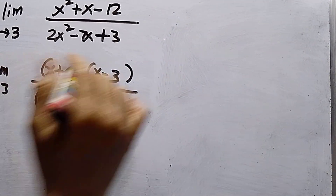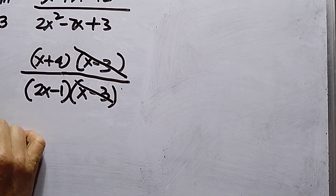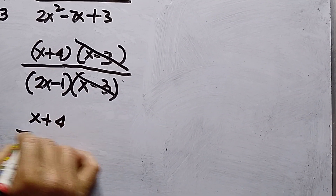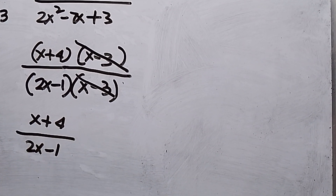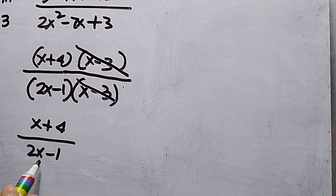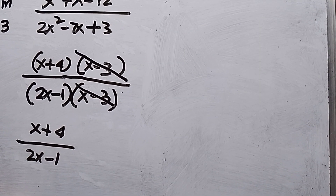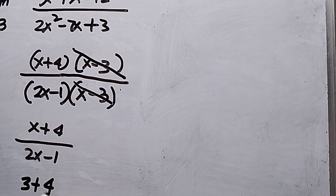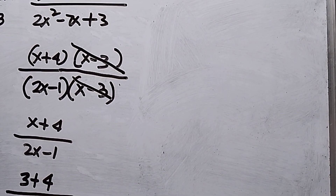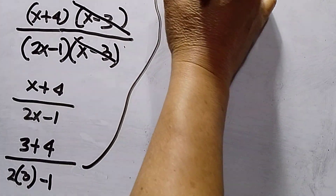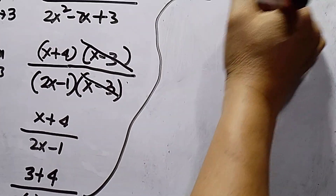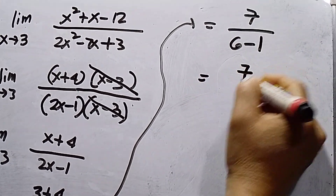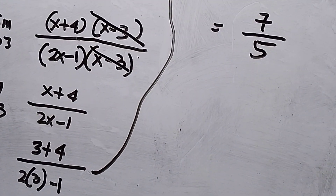Cross out the common factor (x minus 3). We now have limit x approaches 3 of (x plus 4) over (2x minus 1). Substituting x equals 3: 3 plus 4 over 2 times 3 minus 1 equals 7 over 6 minus 1 equals 7 over 5. The answer for number five is 7 over 5. That's all.